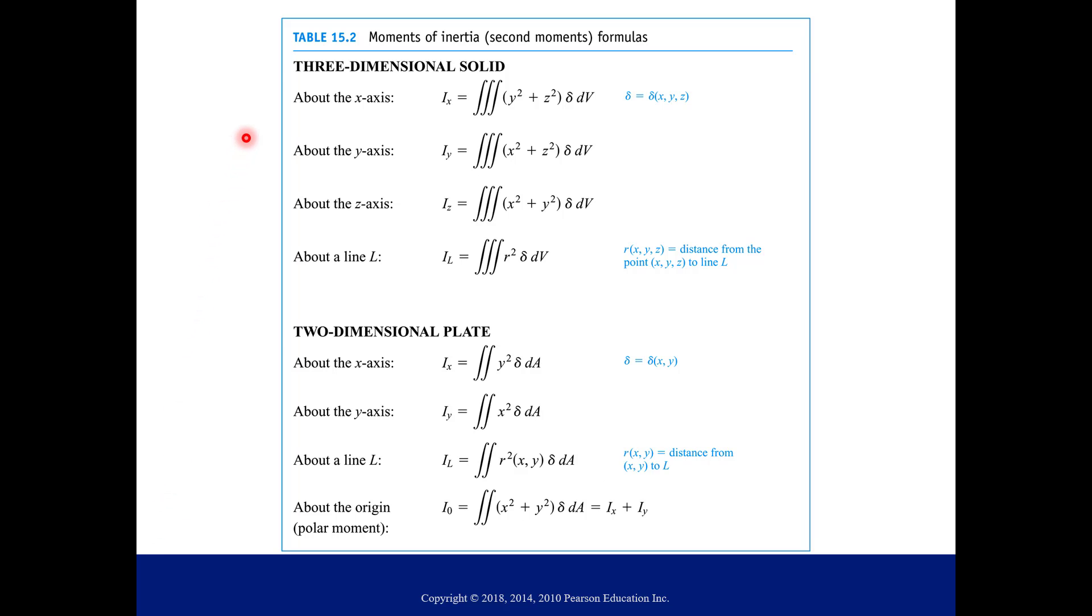So here's all the formulas for you. The first half is our three dimensional solid, and then the bottom half here is the two dimensional plate. They're very similar in nature for what you're going to do for your setups. And so just kind of notice a couple of things. So delta is the density at a particular point. So sometimes it's a constant density. We'll look at an example like that. But sometimes the density changes depending on the point you're at in space. And then we just talked about the second moment or moment of inertia about the X axis. Your integrand is basically the distance to that X axis.